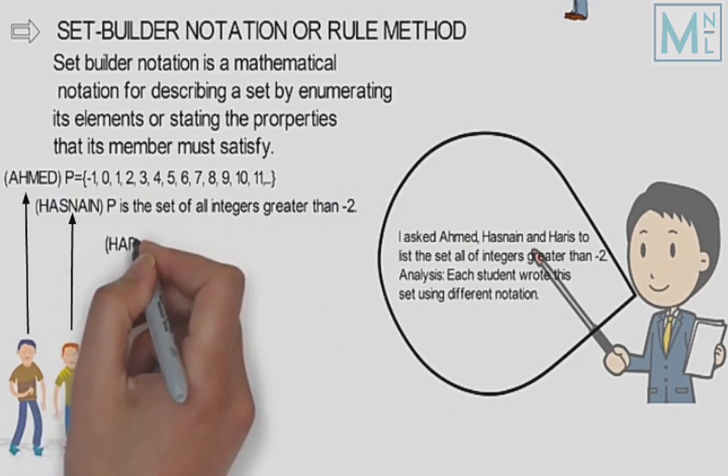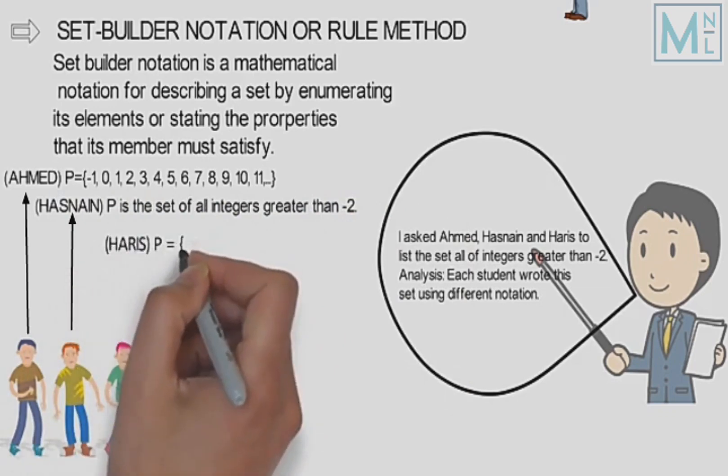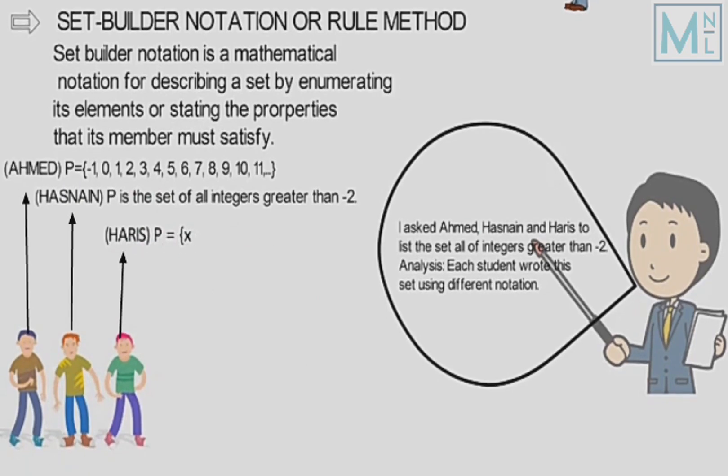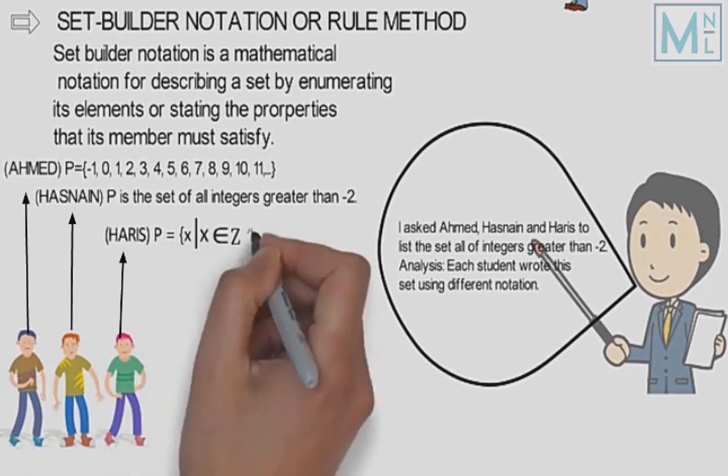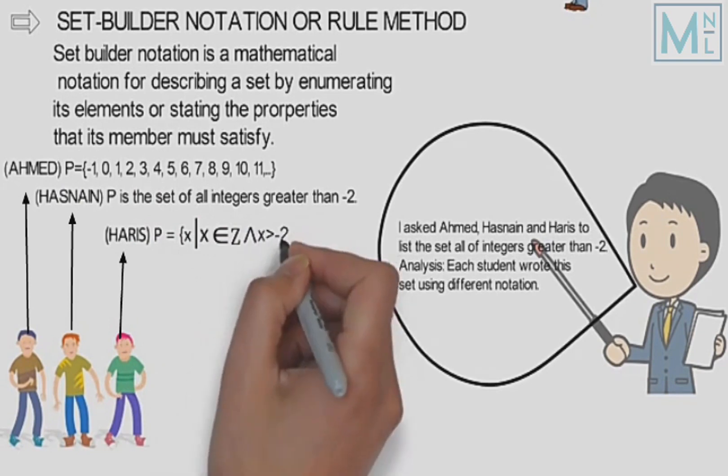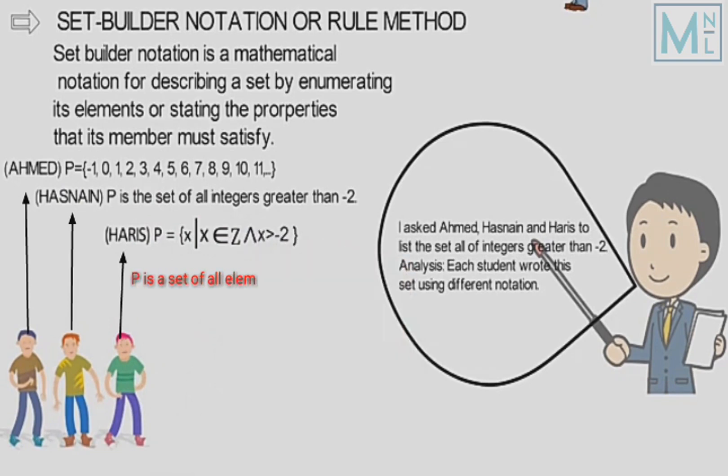Haris ne set banaya symbols ki madad se: P is the set of all x such that x belongs to integers and x is greater than minus two. Jiska matlab hai, P ek set hai woh tamam elements ka jo taluk rakhtay hain integers se, aur woh elements minus two se badae hain. Aur yeh kailata hai set-builder notation.